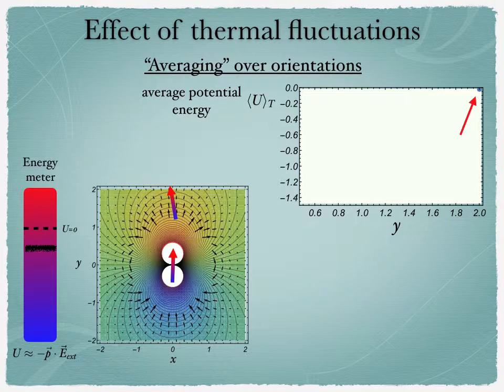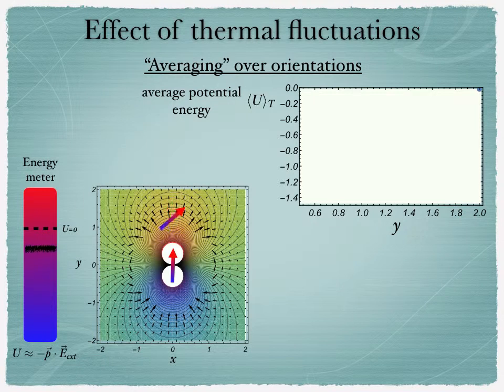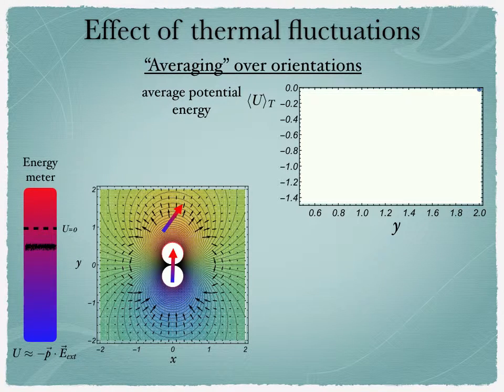Now you can change the distance between the two dipoles and play again the same game. So here you change again, you average over all possible fluctuations and you try to see what is the average value and you would find something slightly lower and that makes sense because then the intensity or magnitude of the electric field is actually higher.